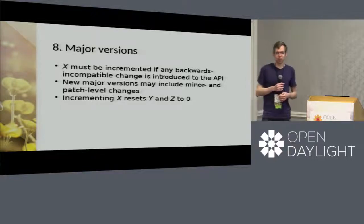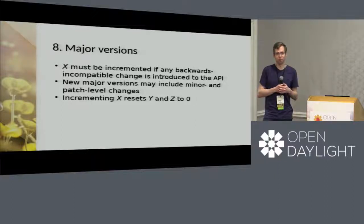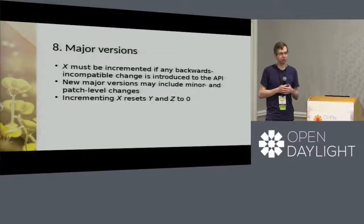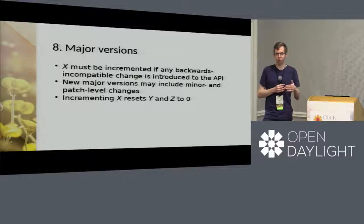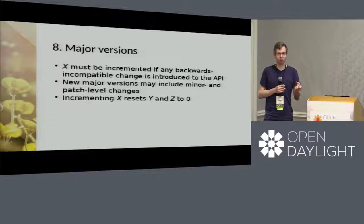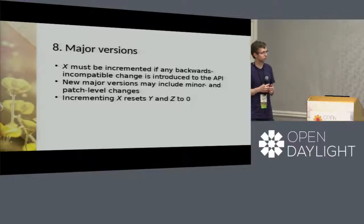The major version (X) is incremented when you introduce backwards-incompatible changes to the API. You can still include bug fixes and new backwards-compatible features while doing that, and you reset Y and Z to zero. The expectation is that going from 1.x.x to 2.0.0 means users know they'll have some work to do — deprecated APIs may have been removed, or changes require code updates.